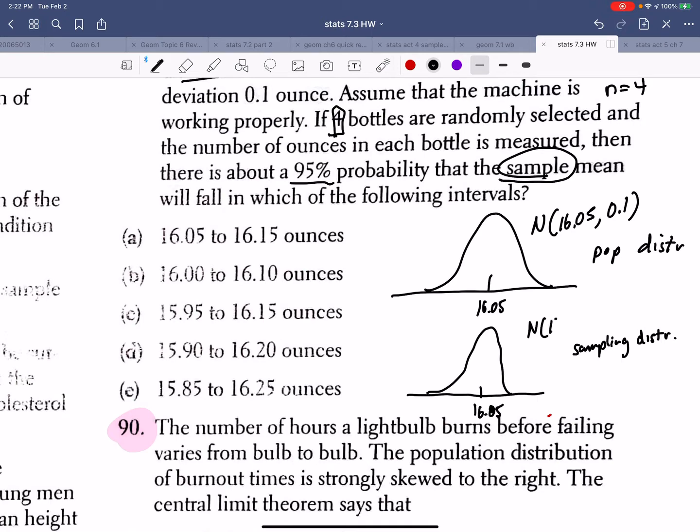So, looking at the graph, my mean is the same, but my sampling distribution is that. So, let's go ahead and calculate that. 0.1 over the square root of 4 would be 2. 0.1 over 2. So, my sampling standard deviation would be 0.05.